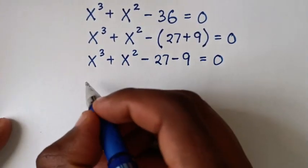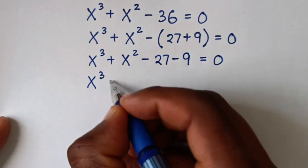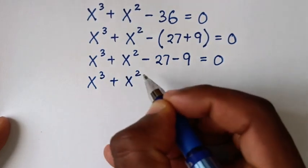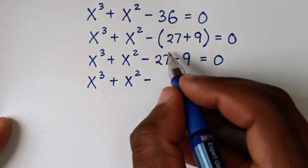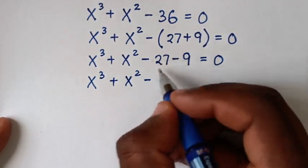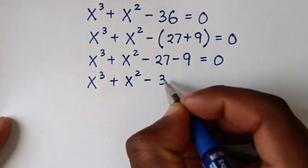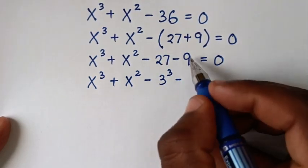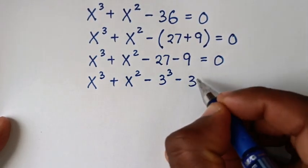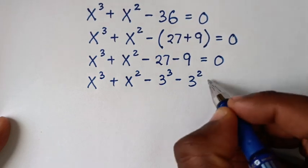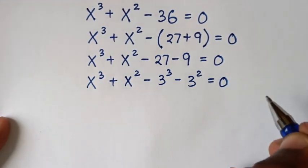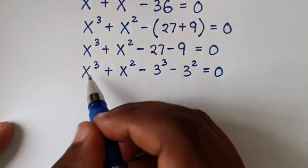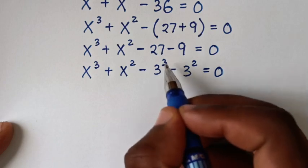Then it will be x power 3 plus x power 2 minus 27 — where 27 is the same as 3 power 3 — minus 9 — where 9 is 3 power 2 — is equal to 0. Then we'll place the like power 3 terms together.